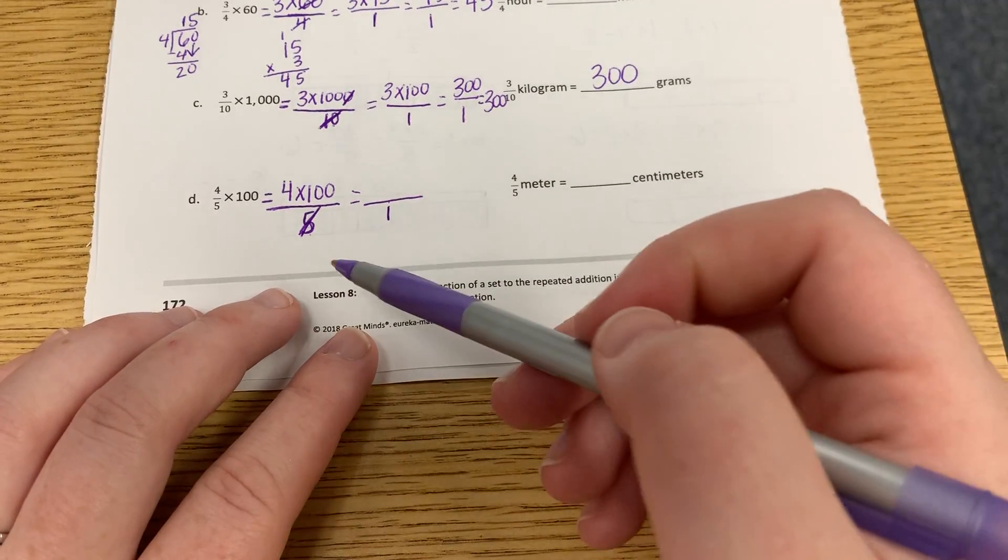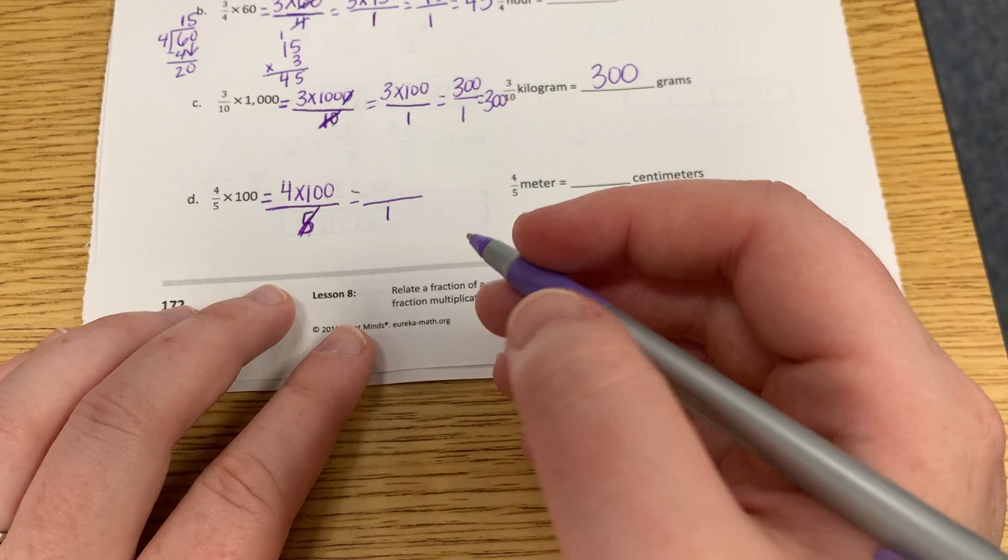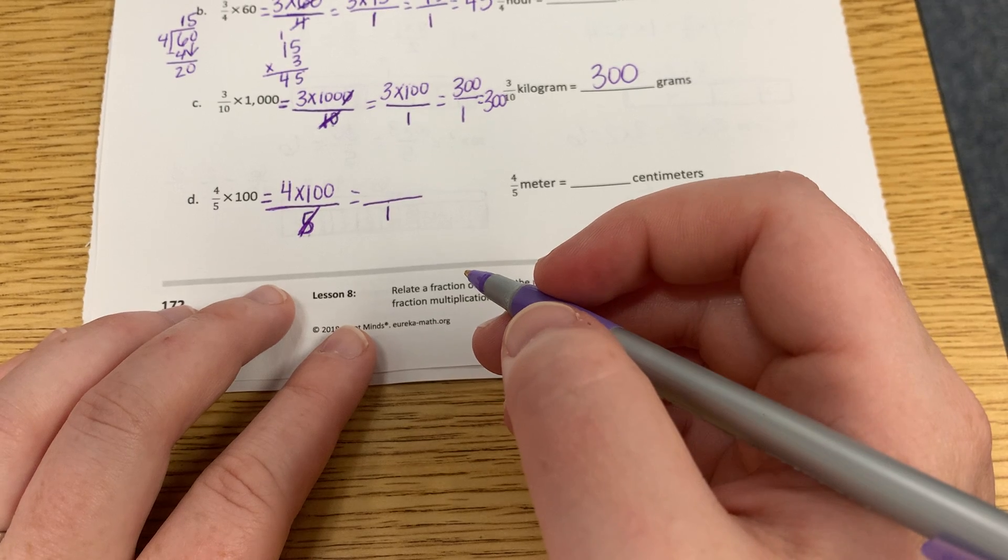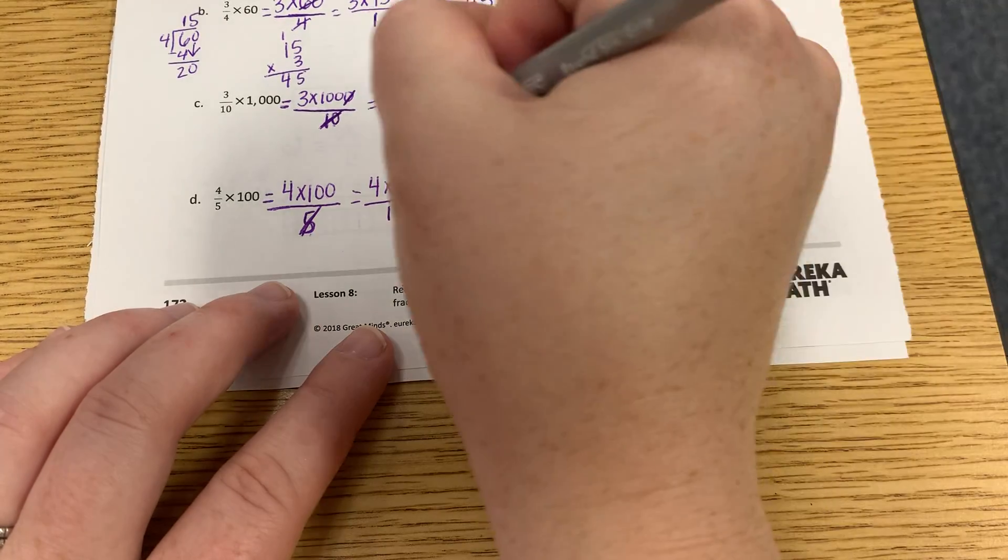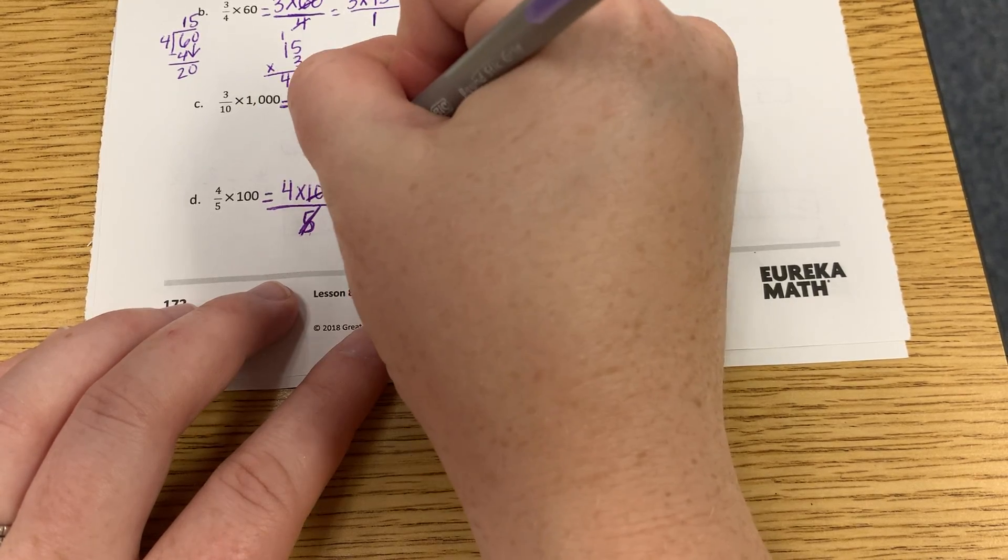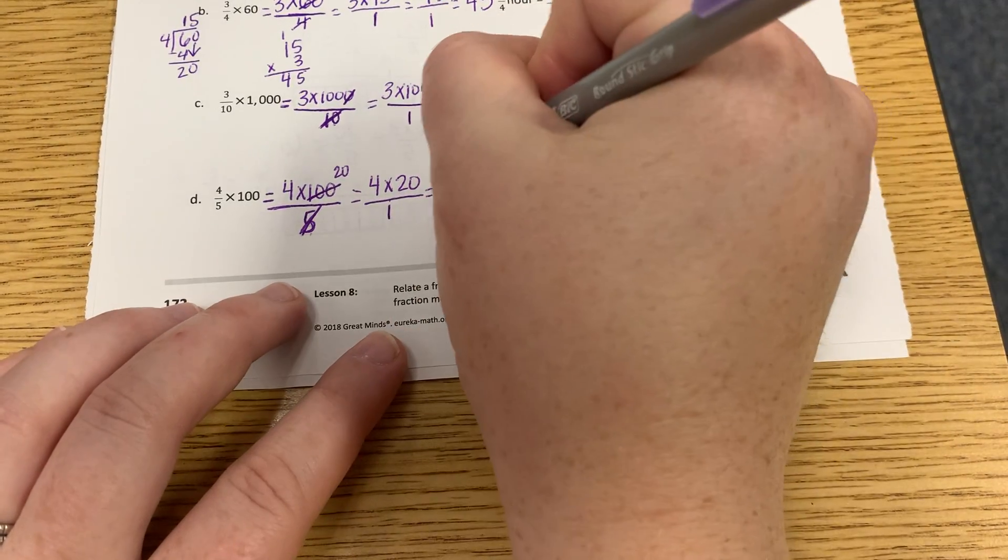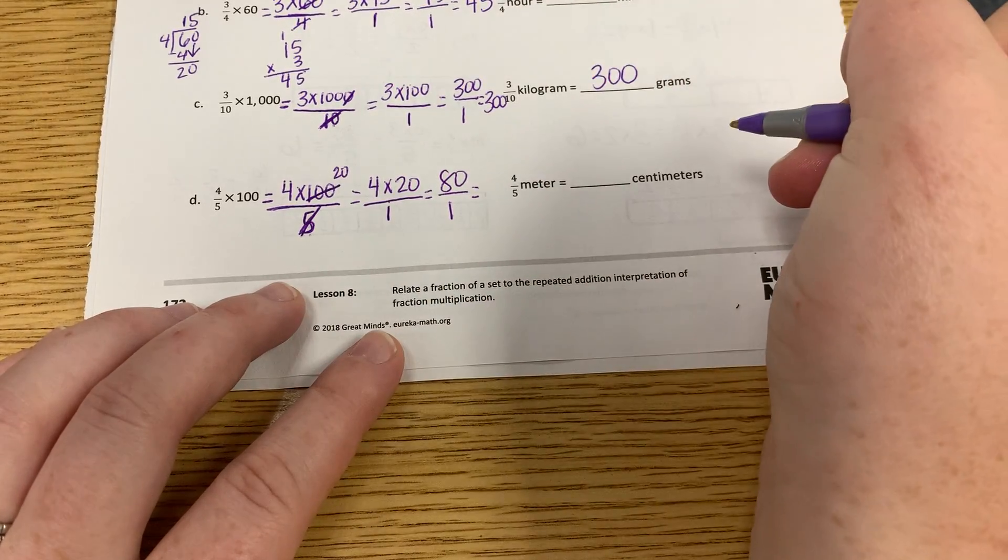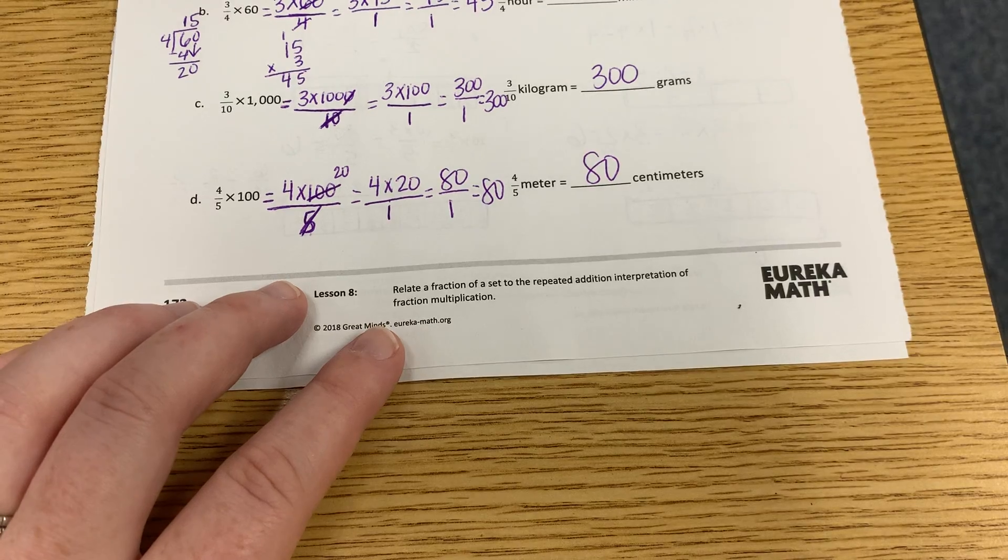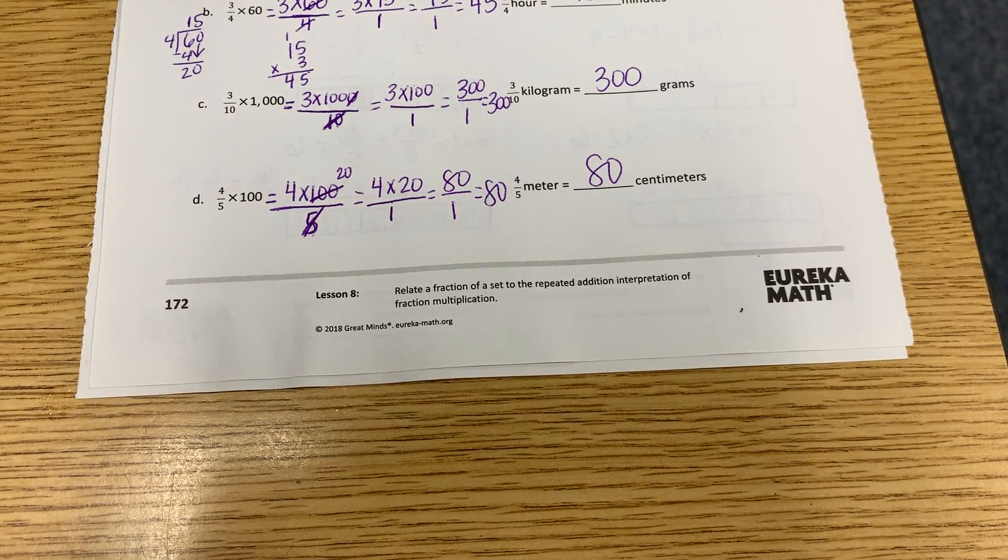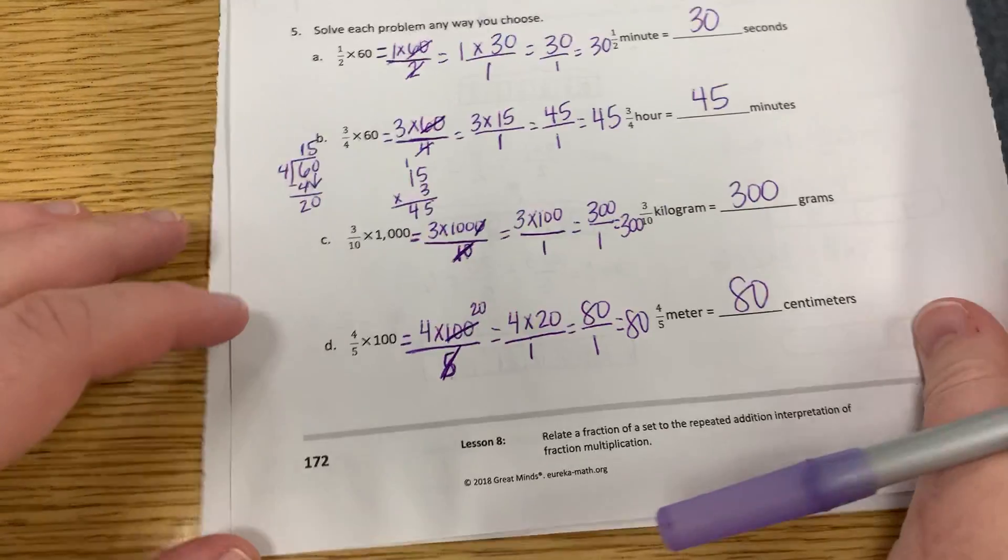Now, whatever you do on bottom, you also do on top. We just said 5 divided by 5 is 1. So what do I need to divide 100 by? 5. So what is 100 divided by 5? I'm hearing too many. 20. So 4 times what? 20. 4 times 20 is 80. So 80 over 1 is the same thing as 80. So 4 fifths of a meter is how many centimeters? 80. So all we're doing is reducing these fractions. Okay? Let's look.